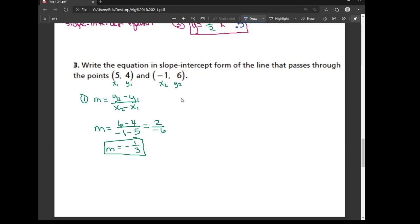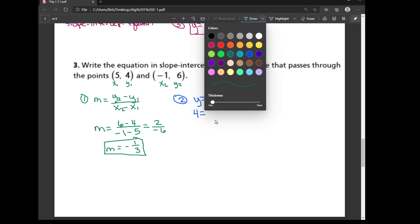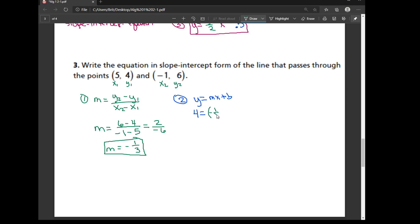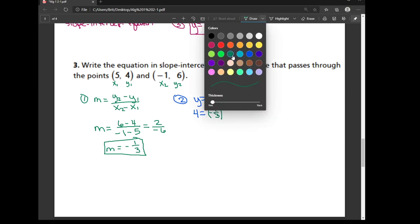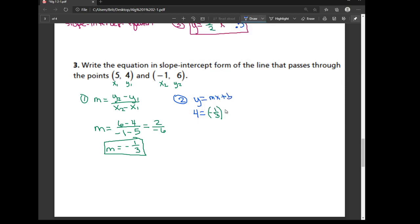Now step 2 in our procedure is to go ahead and take that slope, and take one of these points, and use it to solve for b. So I'm plugging into the formula, y equals mx plus b, and trying to solve for b. So I'm going to go ahead and use 5, 4, because they're both positive. It doesn't matter which one you use. So for y, I'm going to use a 4, equals. Then where our m is, I'm using that negative 1 third that we just got, times x. Our x value is 5 plus b.